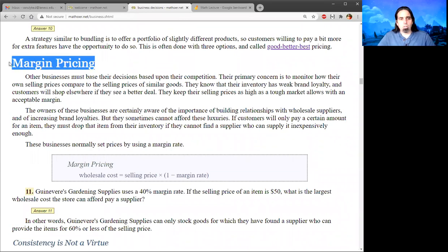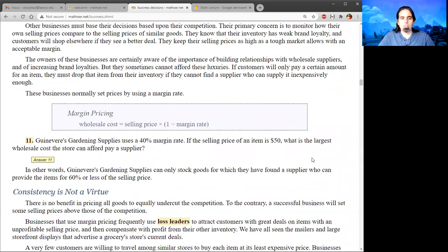Other businesses use margin pricing. They base their decisions primarily on the competition. Their primary concern is monitoring how their prices compare to the selling prices of similar goods at other stores. They know that their inventory has weak brand loyalty and customers will shop elsewhere if they see a better deal. So they set their prices with a margin rate. And it's the same as before, except we're looking down from the selling price to the customer. So we start with a selling price, and instead of a plus, we have a minus here.